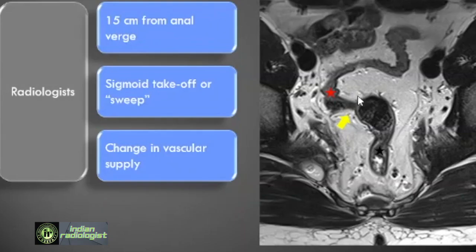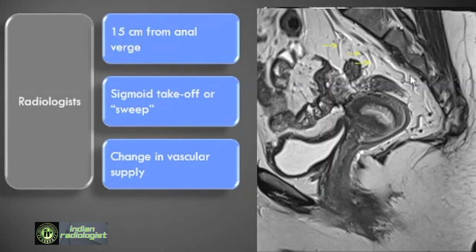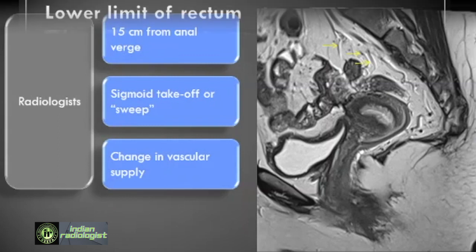Usually at this point of sweep, a change in vascularity also occurs. This is a sagittal T2-weighted MRI showing the sigmoid colon and the spidery branches of the sigmoid artery supplying the sigmoid colon above the level of the sweep. Below the level of the sweep, the rectum is supplied by superior rectal vessels as shown here. If a cancer lies on both sides of this point, the differentiation between rectal and sigmoid cancer is done by the location of the epicenter of the tumor.